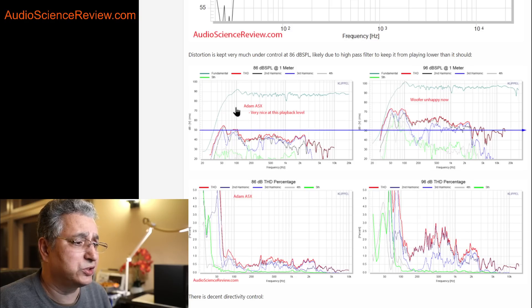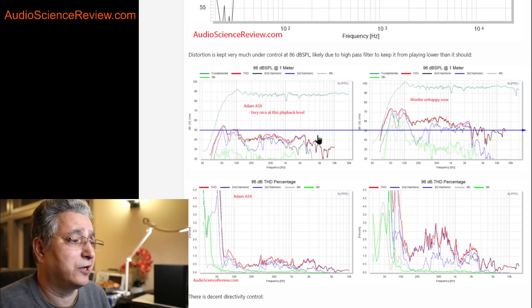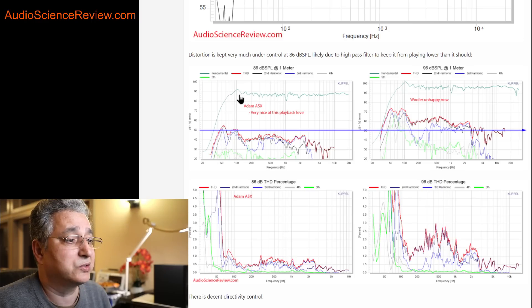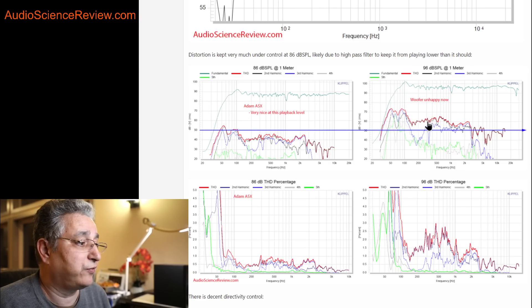As far as distortion, at 86 dB at one meter is actually exceptionally good. I have this 50 decibel reference line and is well below that, even in bass, which is impressive. Now, there's a trick up its sleeve. And the reason this is so good is because the frequency response is dropping very quickly. So this speaker doesn't try to reproduce deep bass. And as a result, it doesn't have distortion shooting way up here.